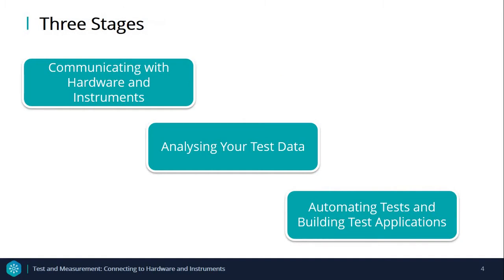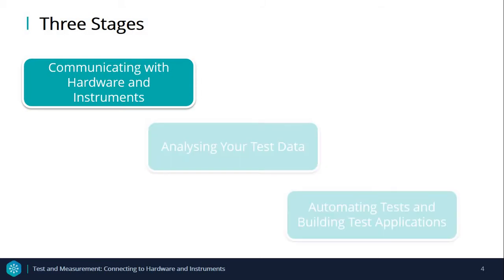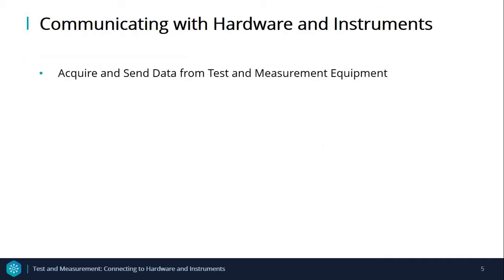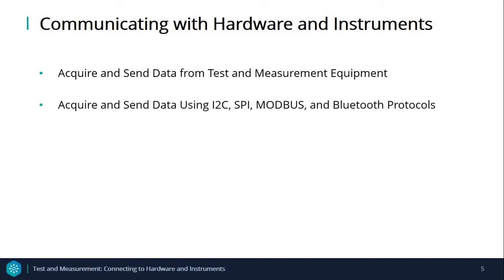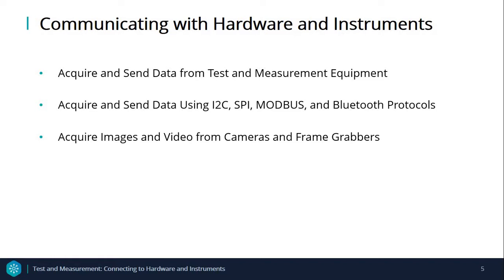Typically, there are three stages to follow when it comes to test and measurement: communicating with hardware and instruments, analyzing your test data, and automating tests and building test applications. In this webinar, part one, we will be focusing on the first stage, which is communicating with hardware and instruments. Using MATLAB or Simulink and related products, you can control and acquire data from data acquisition hardware, imaging hardware, instruments or CAN buses. You can also communicate with circuit boards and sensors using SPI, I2C, and a few others. You can then visualize and analyze the data without leaving your workspace.